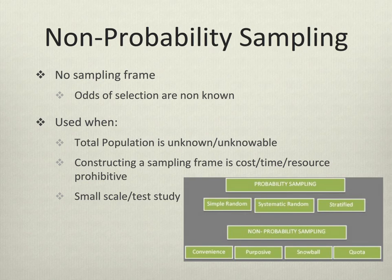You use a non-probability sampling method when you have no sampling frame — no complete list of all possible elements that go into your sample — and the odds of selection are not known. Even if you know the total population in terms of number, if you don't have a list of everyone in that population, you don't have a sampling frame.